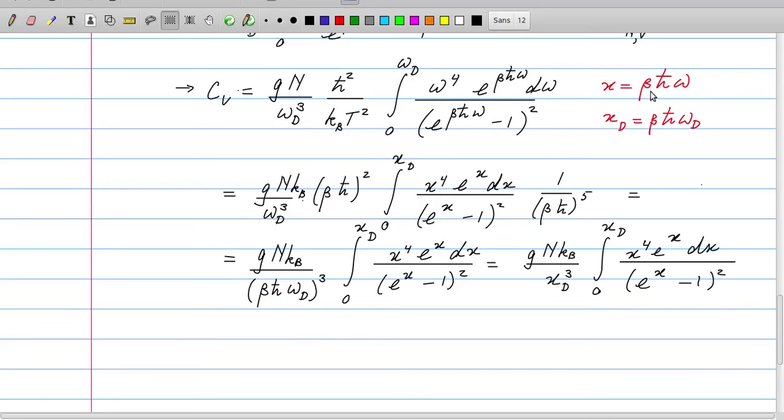We have got rid of these factors beta h-bar, they now occur in the pre-factors to this integral. If we write everything together, we get this expression. Then we see that here in the denominator we have exactly an x_D to the power 3. x_D is defined over here, and so we have an integral which now only involves the upper boundary x_D as a variable and we have this pre-factor.